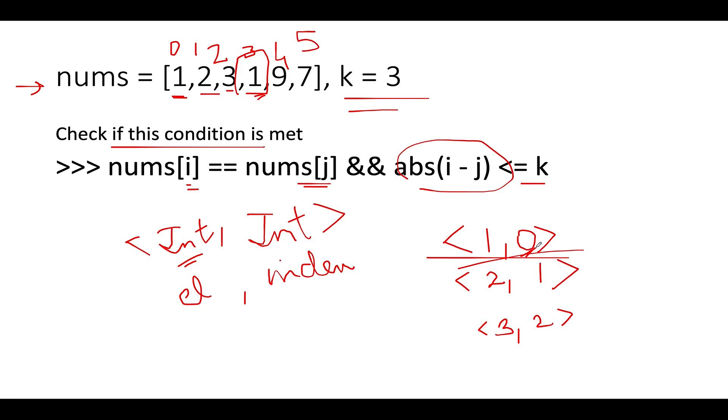So what are we going to do? We'll calculate the distance between the current occurrence of 1 which is 3 minus 0. So 3 minus 0 gives you 3. Is 3 less than or equal to 3? Yes, it is. We will abort the process and return true because this condition is met. So the answer for this problem turns out to be true.